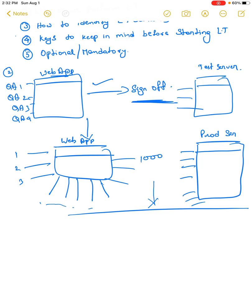In production, when a thousand users are accessing the same application you tested, the performance might be down. The main reason is that the server response for four users is definitely different from how it responds to a thousand users. We signed off and said we were good — so how can we sign off without doing production-like load testing? That is what we are going to discuss today.